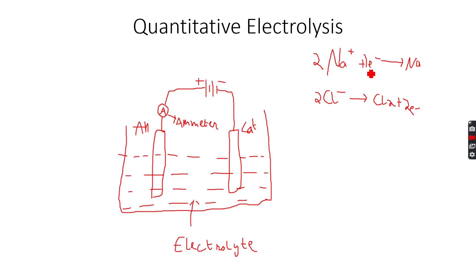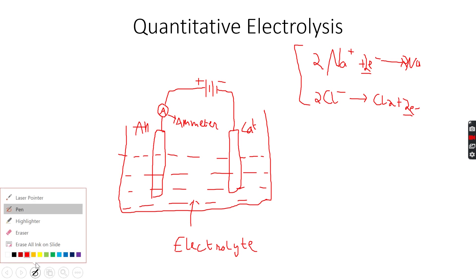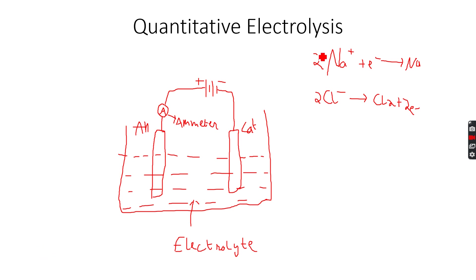We have two over here and two over here because we've multiplied the entire equation. So: 2Na⁺ + 2e⁻ → 2Na, which is sodium. The reason I multiplied the sodium equation by two was because we had two electrons in the chlorine equation. Now these are called half equations, and this is how you write half equations.